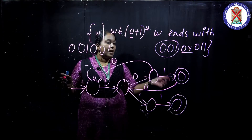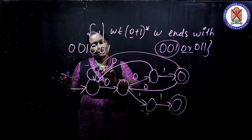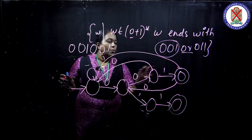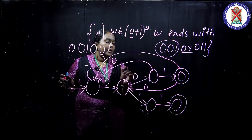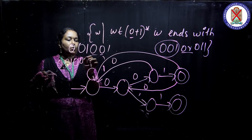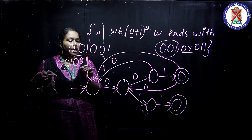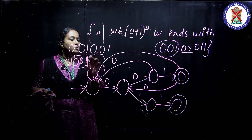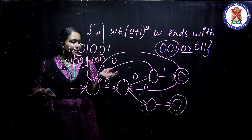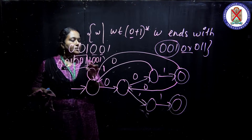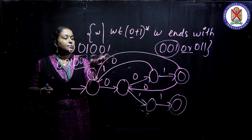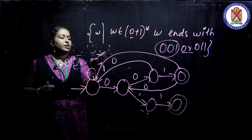What happens when 1 comes to the intermediate state? When 1 comes here, the intermediate pattern is 0, 0, 1 — so a 1 must not appear in the middle. It must go back to the first state. Because the pattern 0, 0, 1 followed by an extra 1 is not correct — it must end with 0, 0, 1. So this 1 must move to the first state, and if again 0, 0, 1 follows it can be accepted; otherwise it is rejected. So the 001 condition is complete.